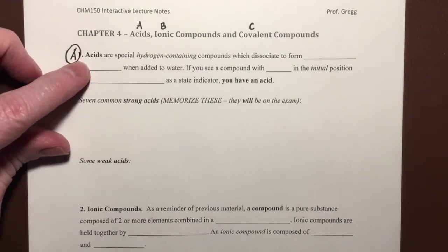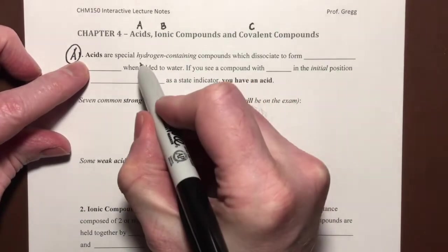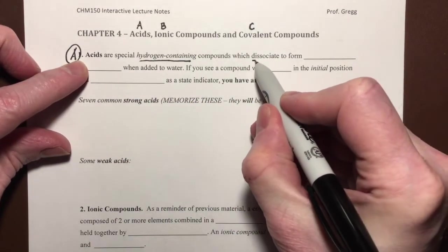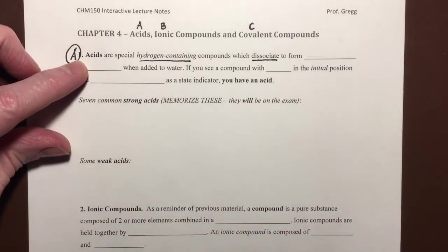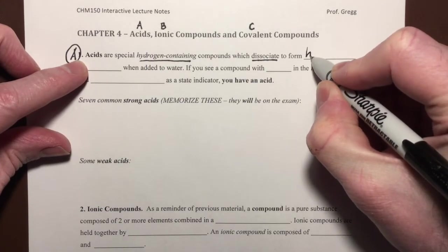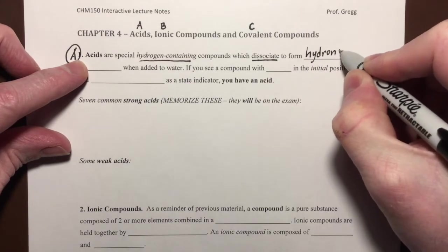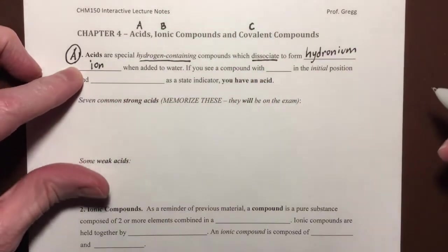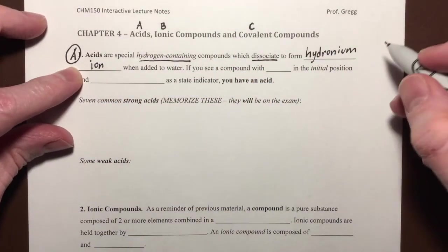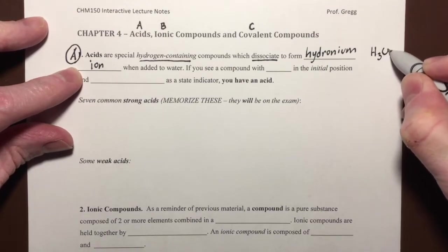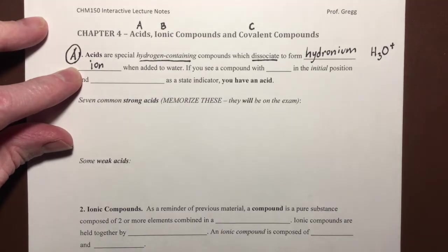First of all, acids are special hydrogen containing compounds which dissociate, and the word dissociate means they break apart to form ions. And the specific type of ion that they form is the hydronium ion. And just a reminder that a hydronium is H3O plus, that's the formula for the hydronium ion.